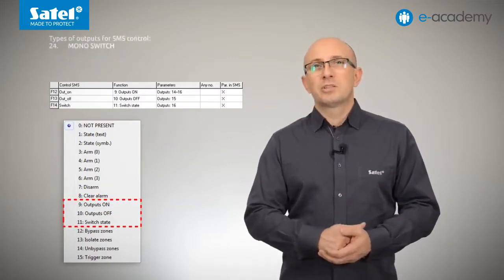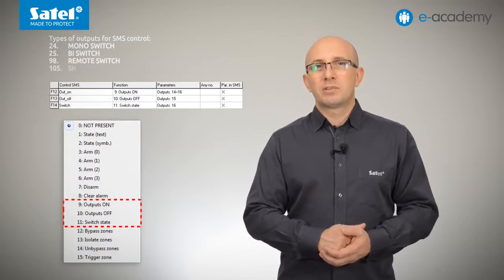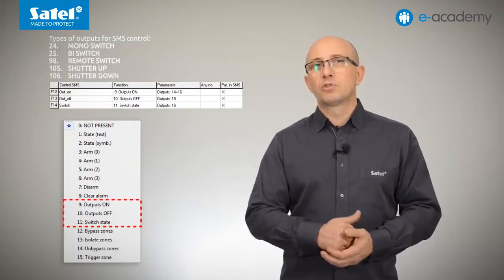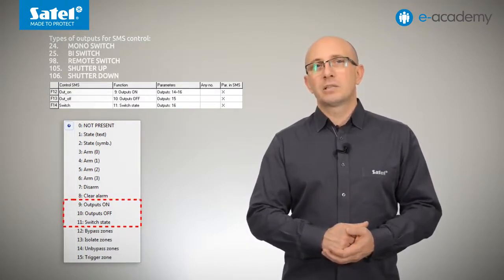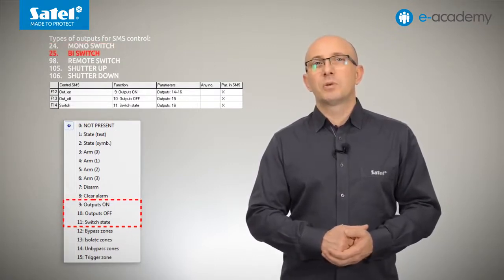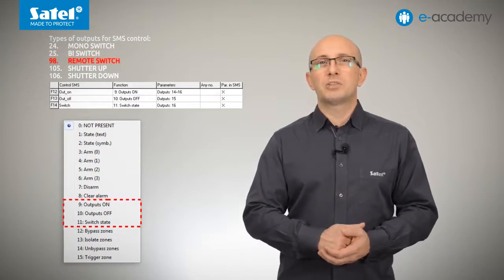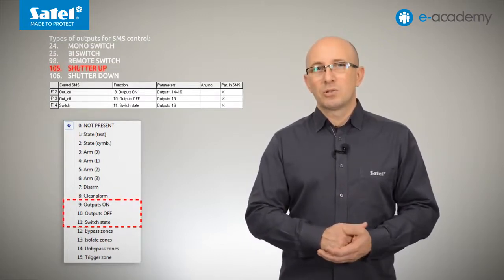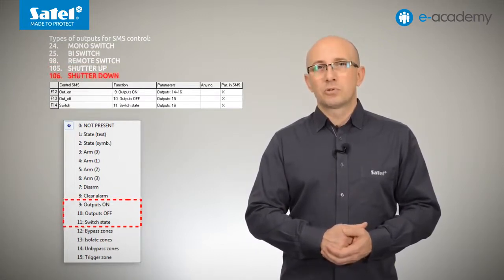It should be remembered that the outputs which you want to control by using SMS messages must be programmed as one of the following types: 24, 25, 98, 105 or 106.